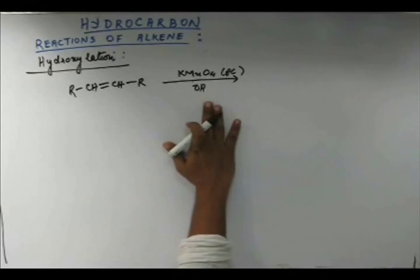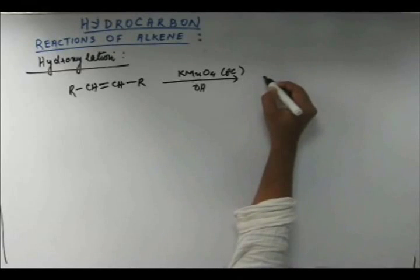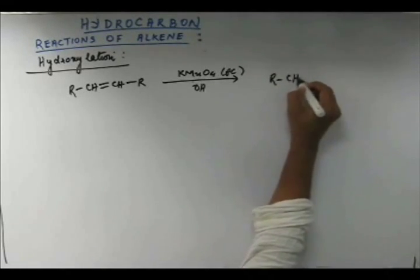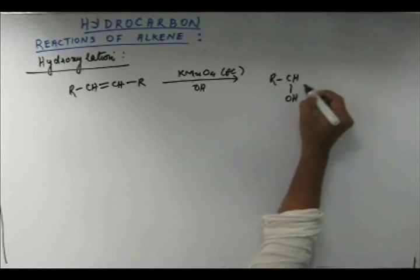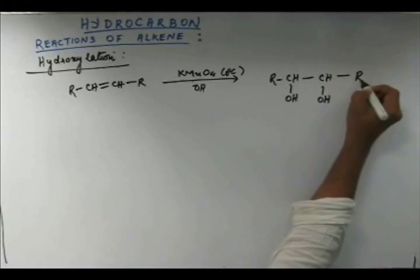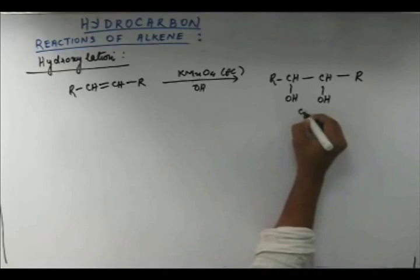KMnO₄ is a strong oxidizing agent only when it is hot and in acidic medium. When it is cold and in basic medium, it is not a ruthless oxidizing agent — it becomes calm and a peaceful reagent. The product it provides with the alkene is a glycol, and specifically a cis-glycol.